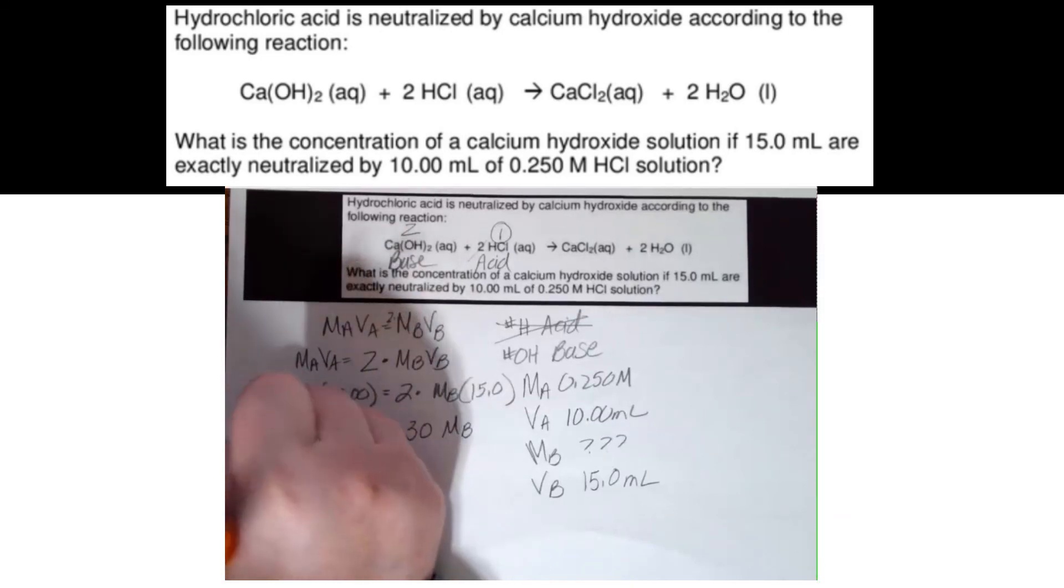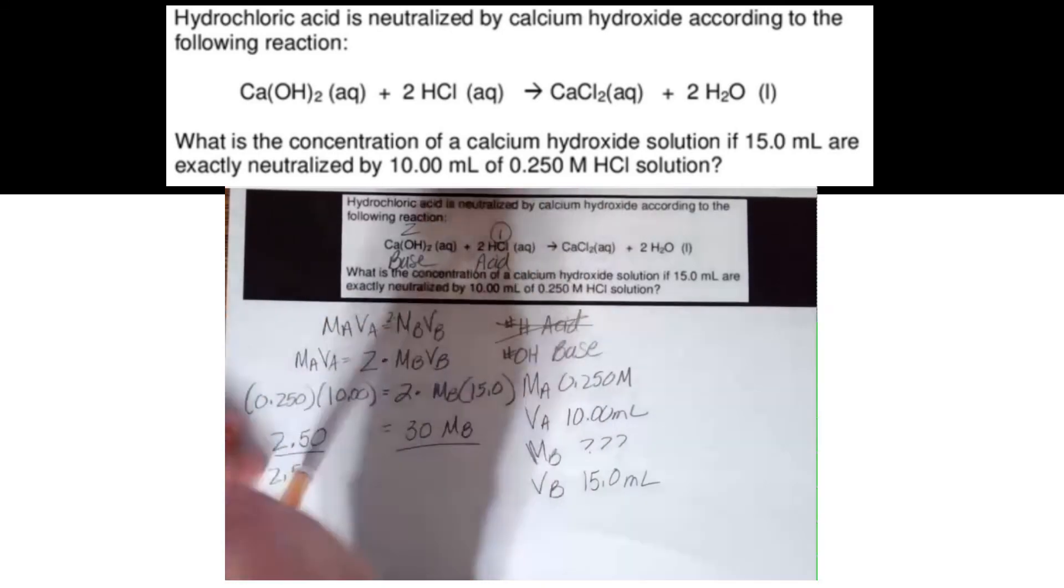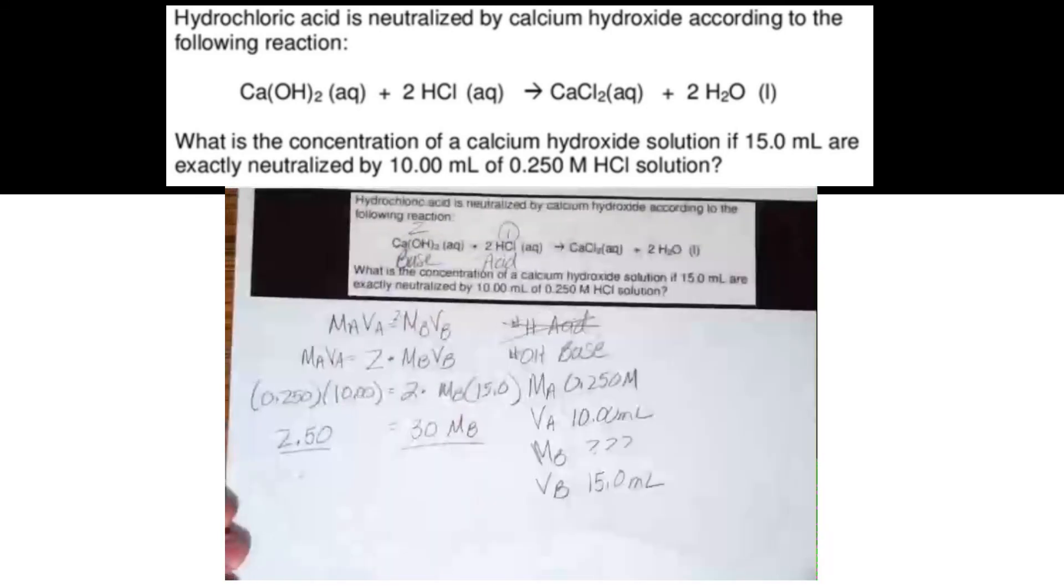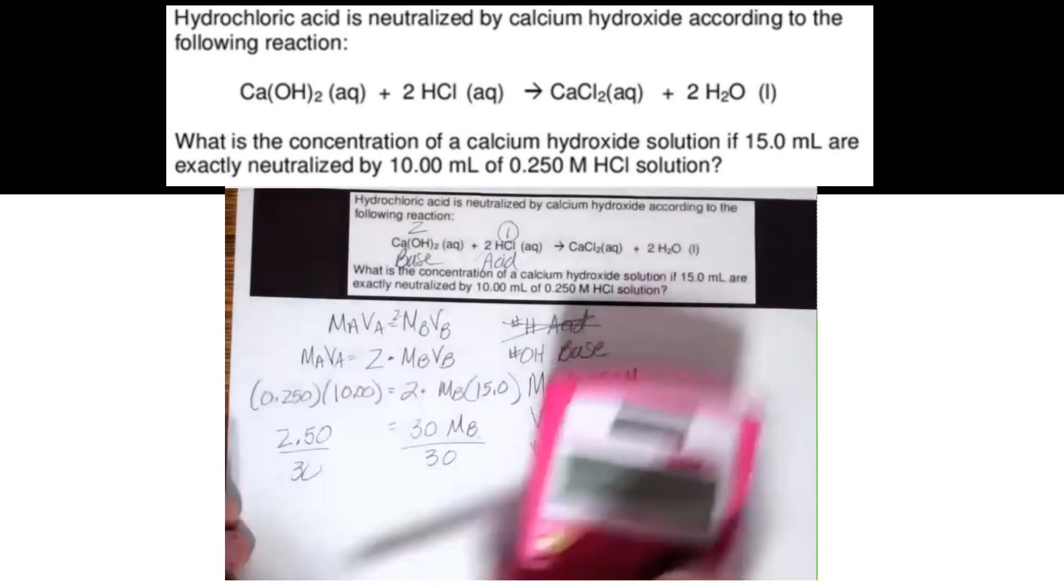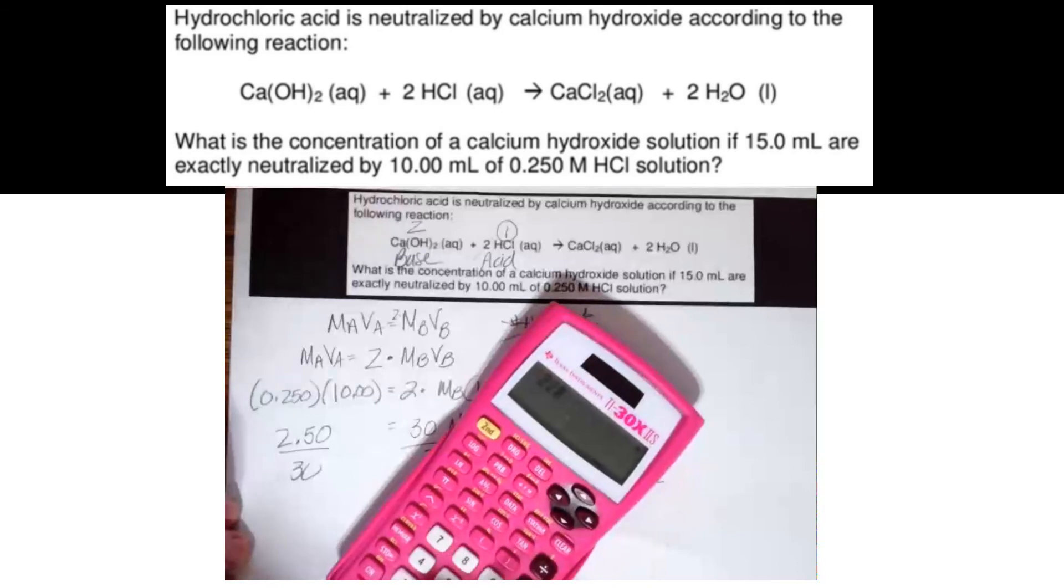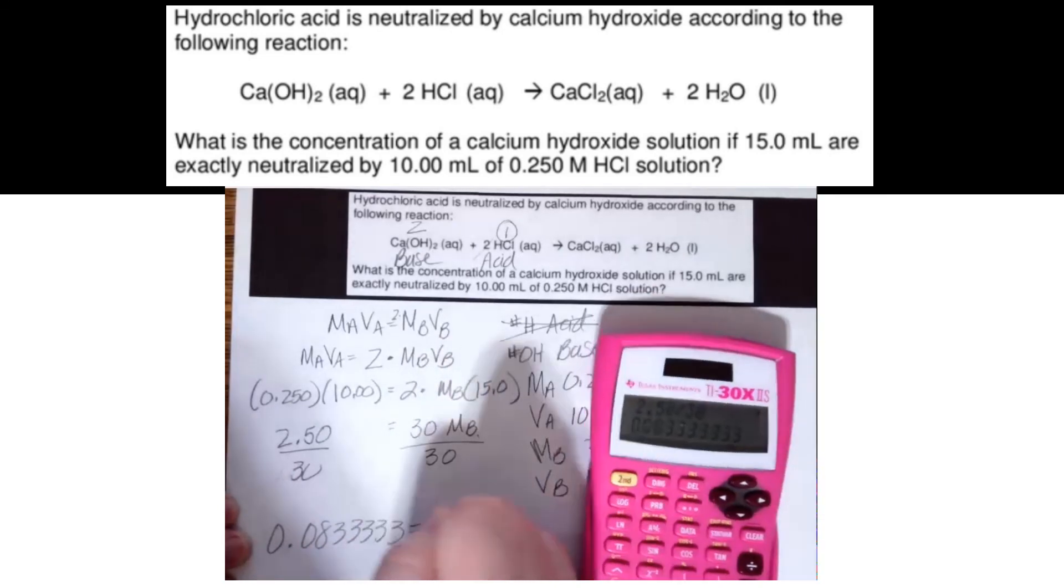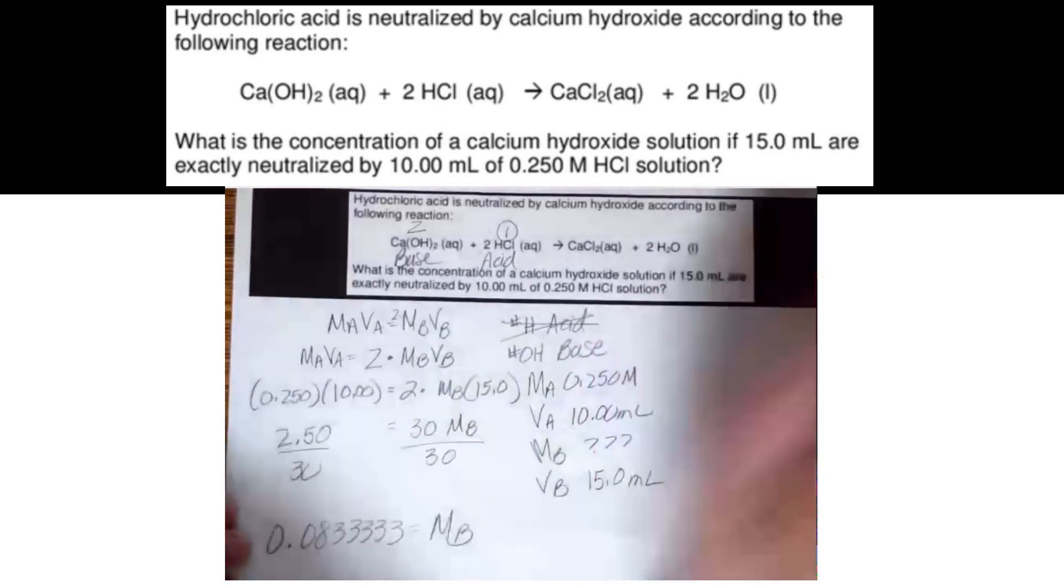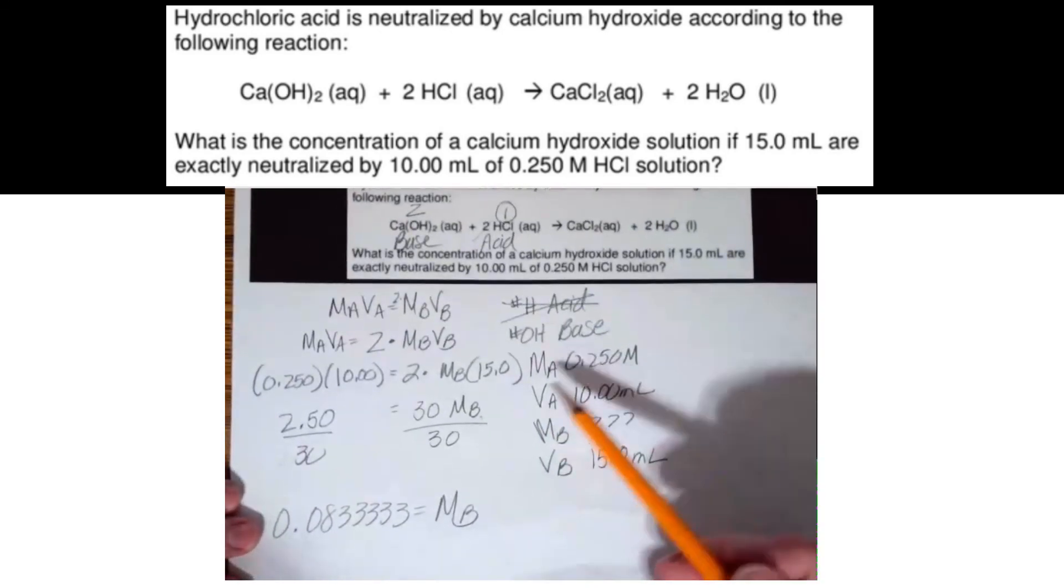I'm going to divide both sides by 30. I want MB by itself. So I do 2.50 divided by 30 equals 0.0833333 equals MB. Now this kind of makes sense because this was a low number for the molarity of the acid. So I shouldn't have gotten a giant number.